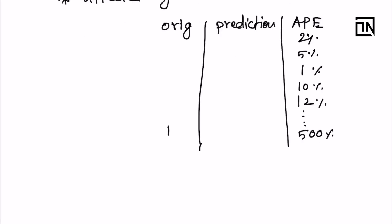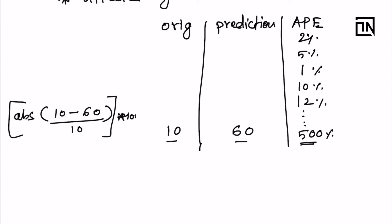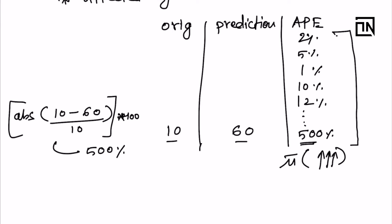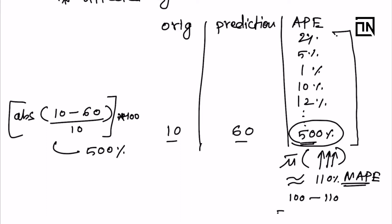One scenario is: the original was 10 and the prediction was 60. These two numbers are very far away percentage-wise — 500% far away. The calculation is: |10 − 60| / 10 × 100 = 500%. When you take the average of all these percentage errors including this outlier, the average inflates. Just for example, let's say this calculates to roughly 110, so the MAPE is 110%. If you subtract from 100 you get minus 10% accuracy — which will terribly confuse a business person.